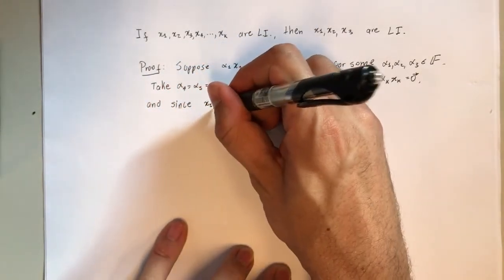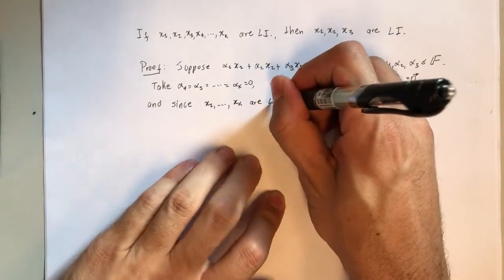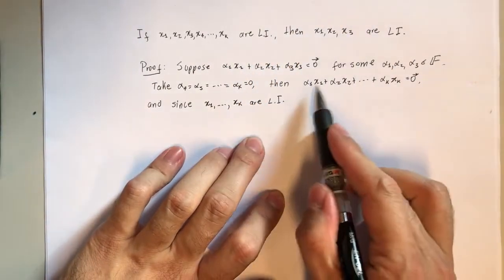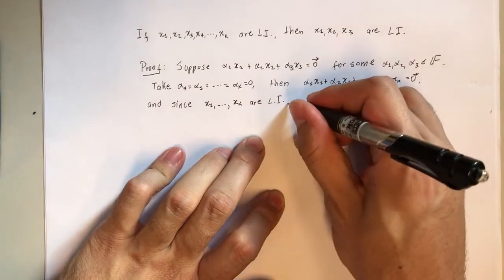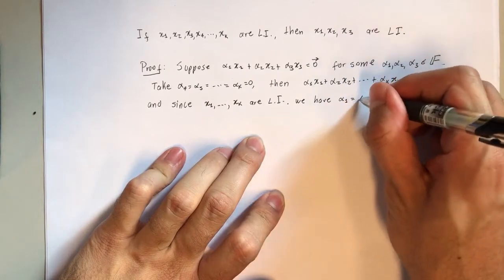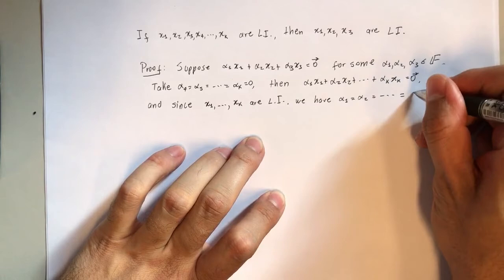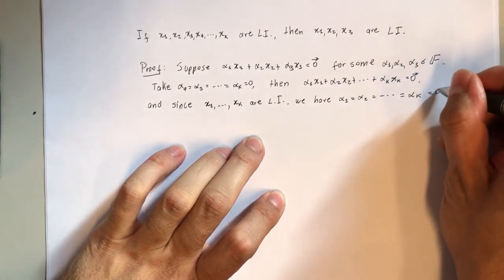all these vectors, x1 up to xk, are linearly independent, and now we have a linear combination that gives zero, we have alpha1 and alpha2 up to alphak are all zero,